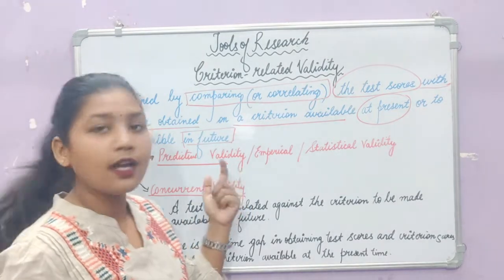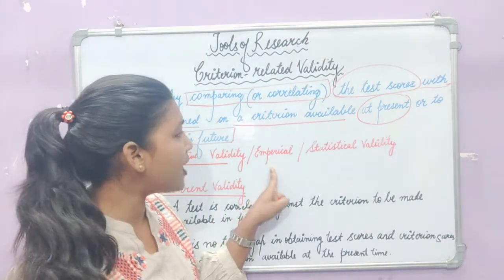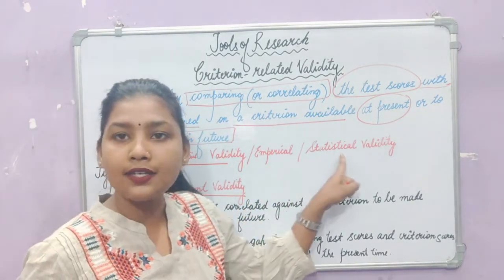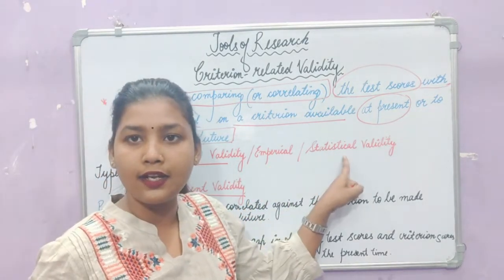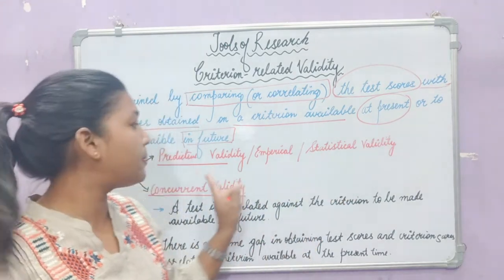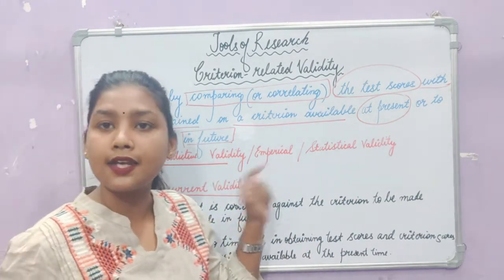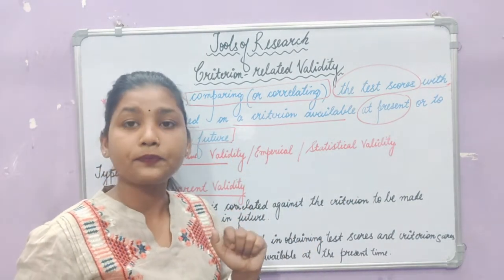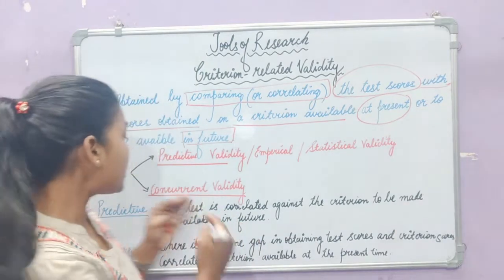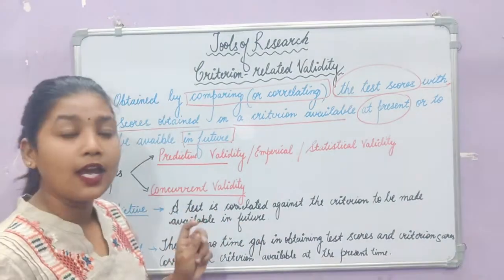The other names of predictive validity are empirical validity and statistical validity. These two names refer to predictive validity. The second type is concurrent validity.